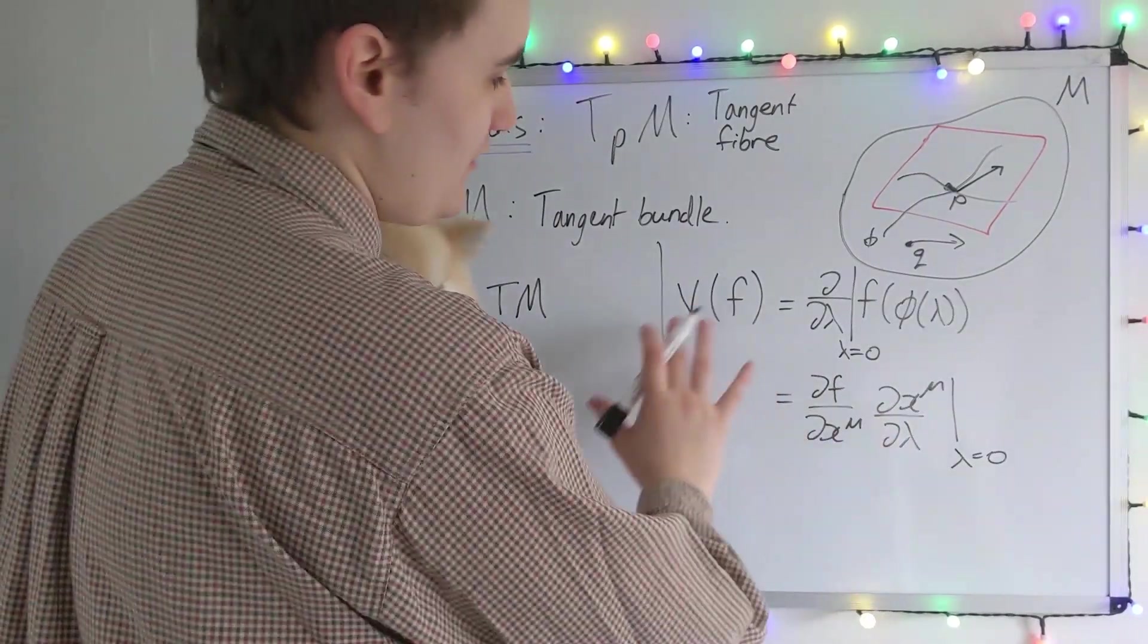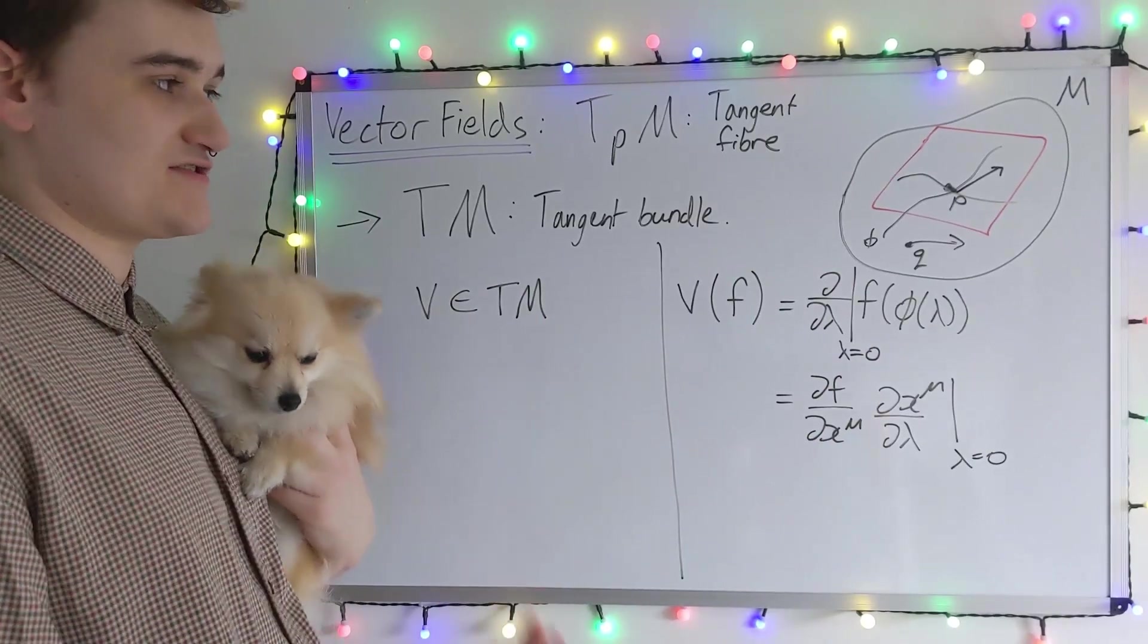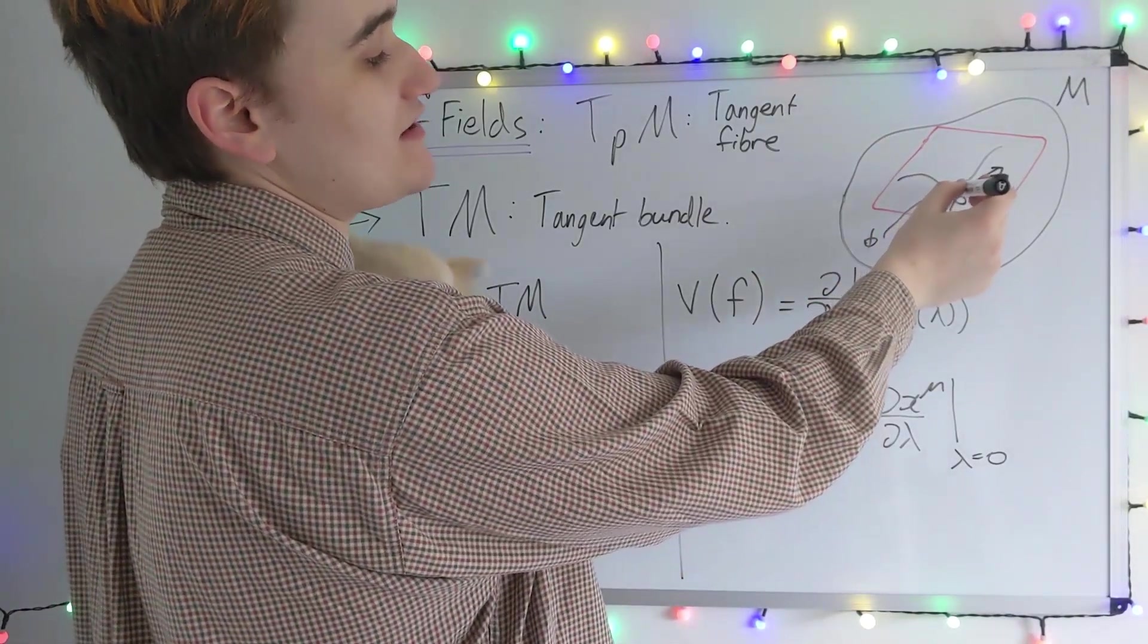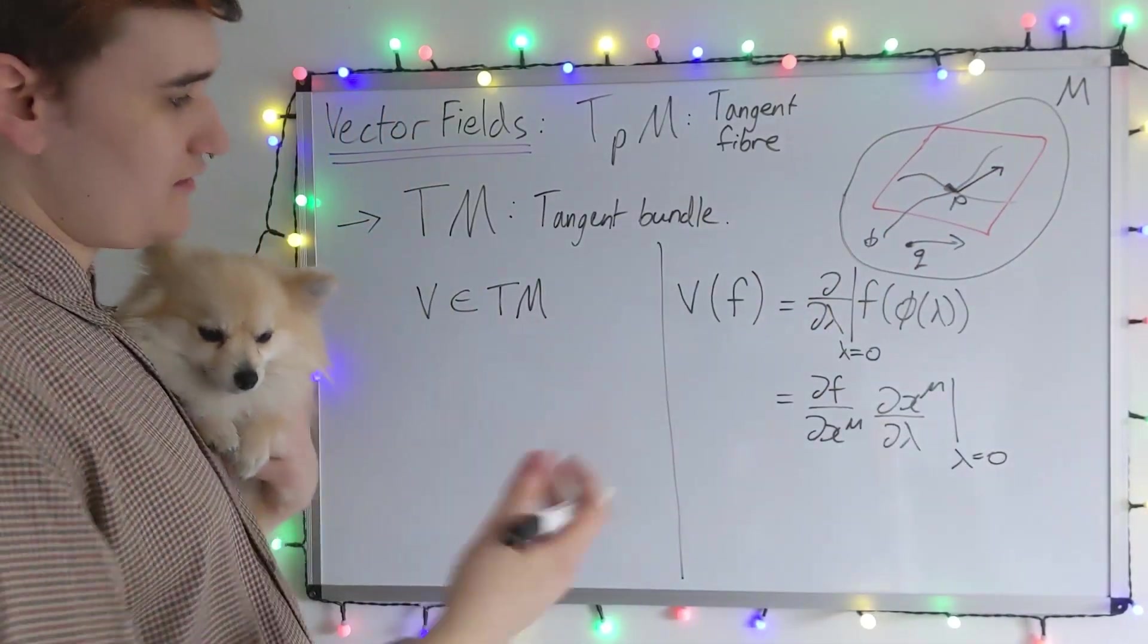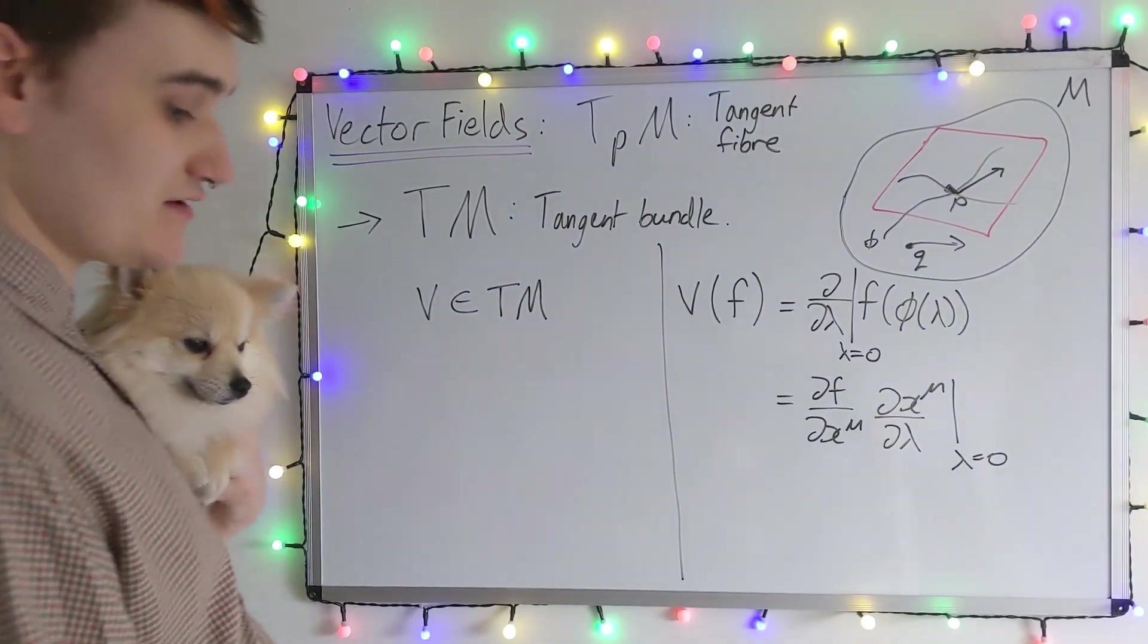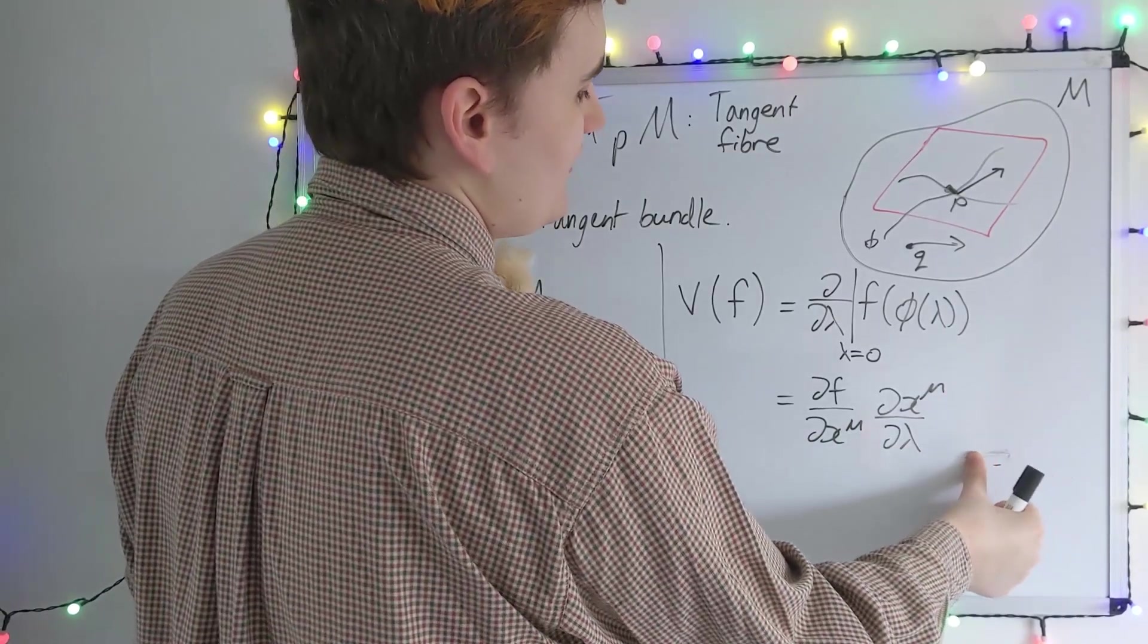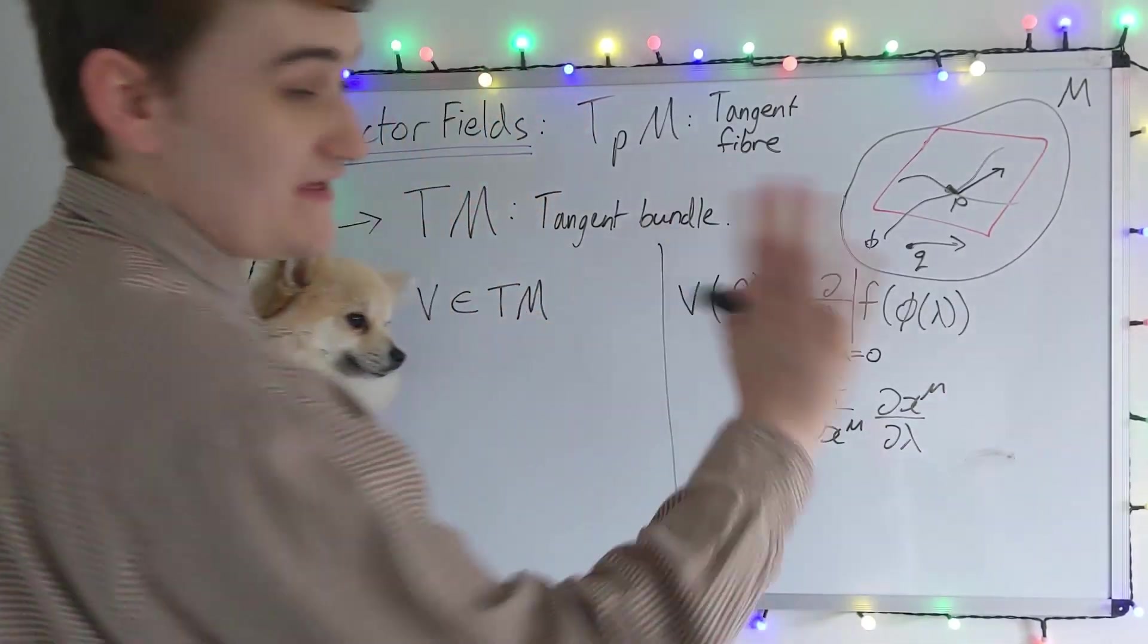This df by dx mu, this is the basis part of the vector which acts on the function. When I was writing all that down, this is all okay. But I probably forgot to stress that all of this is happening at the single point p. To make the extension or the generalization to vector fields, all we need to do is just stop evaluating at the point p and consider the vector over the entire manifold.